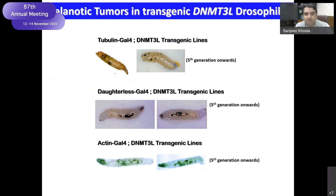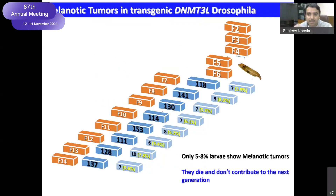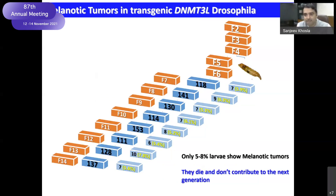He did this in various ways, and in the fifth generation, whichever DNMT3L lines or whichever inducers of DNMT3L expression — these GAL4 driver lines — he used, he would always see in some of the larvae these black spots, which are basically melanotic tumors. Another important thing he noticed was that this did not happen in all larvae — only in five to seven percent. When he kept self-crossing up to the 20th generation, in each generation five to seven percent of the larvae would have melanotic tumors, die off, while the remaining fertile flies would give progeny showing the same pattern in the next generation.